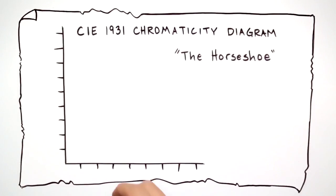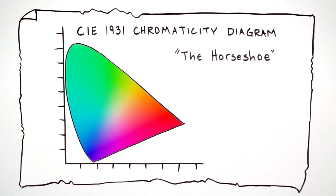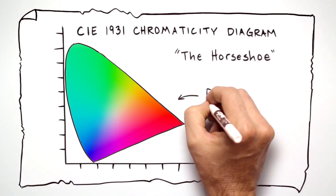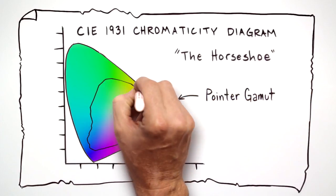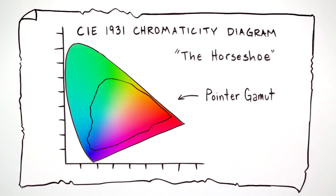In 1931, a famous visual map was created to show all the colors the human eye can see. Years later, Michael Poynter's research made it clear that in the real world, we typically encounter less than half of the colors we're capable of seeing.